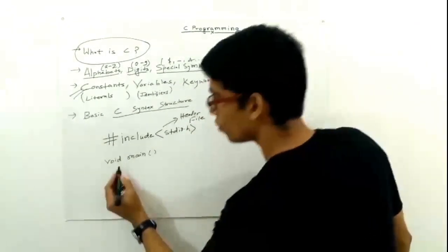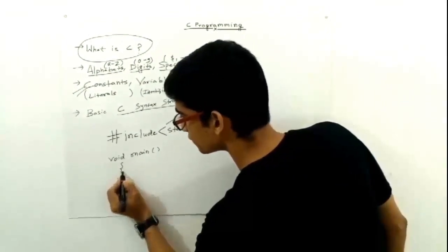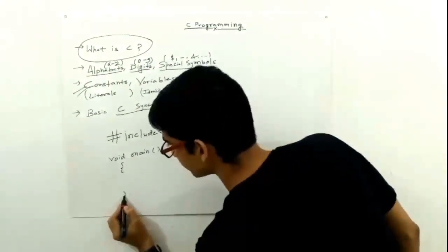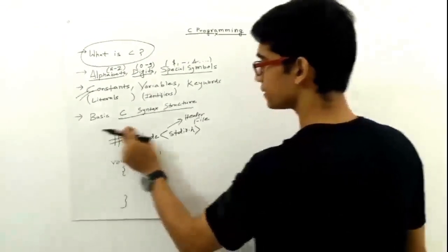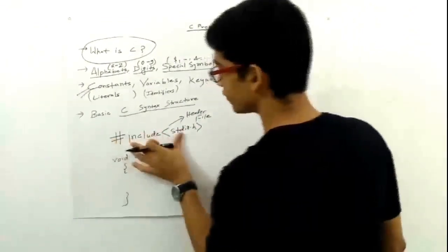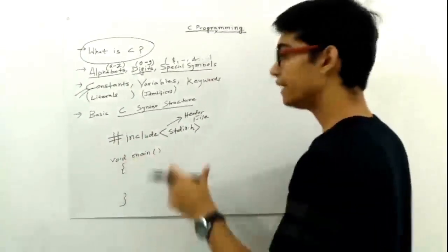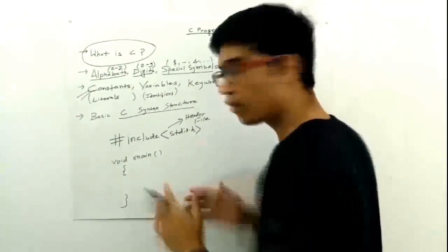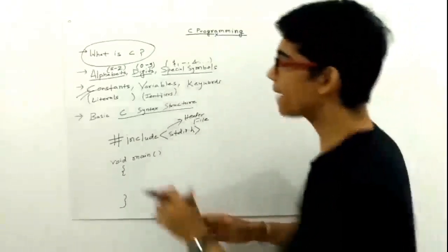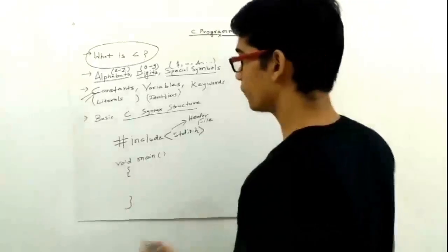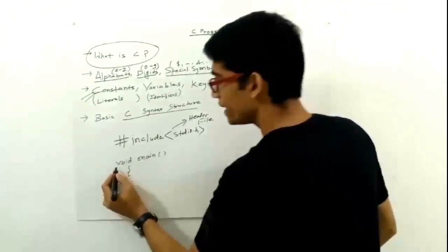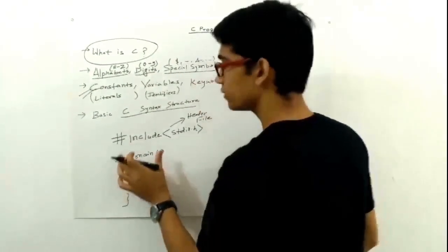This is opened by curly braces and closed again by curly braces. So we will analyze these statements or these header files and main function in depth at later stages. For now, we will assume that we have to write this basic construct for every C program.